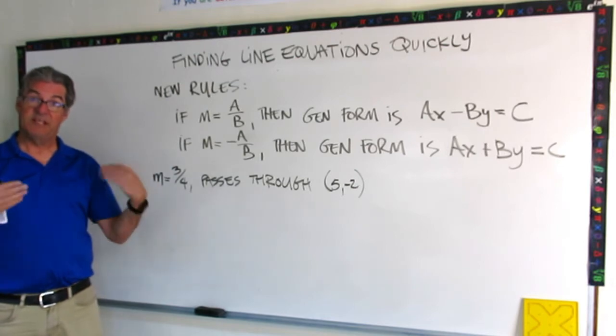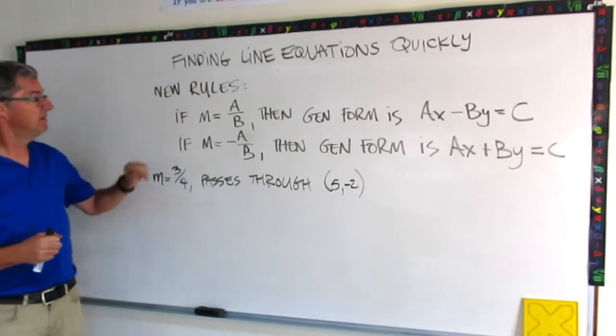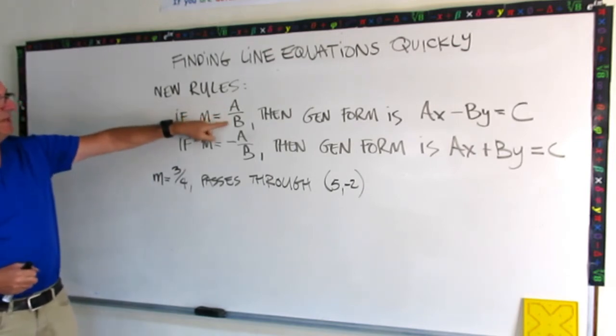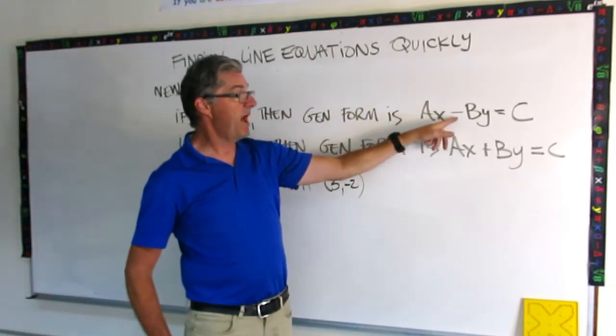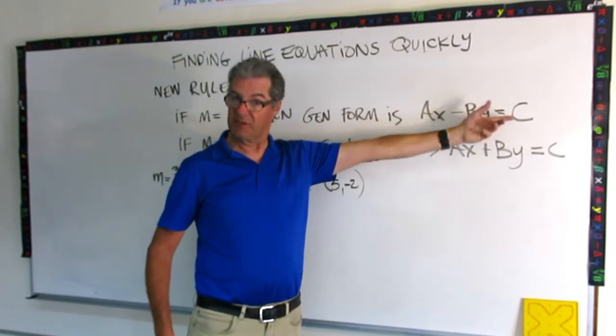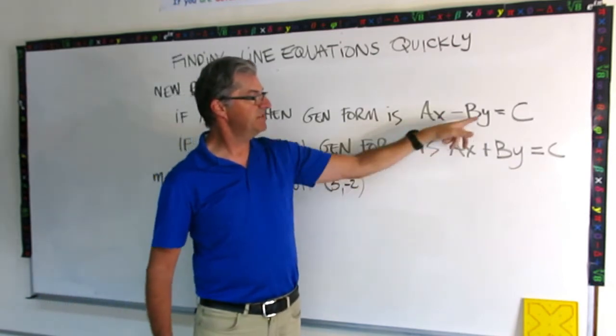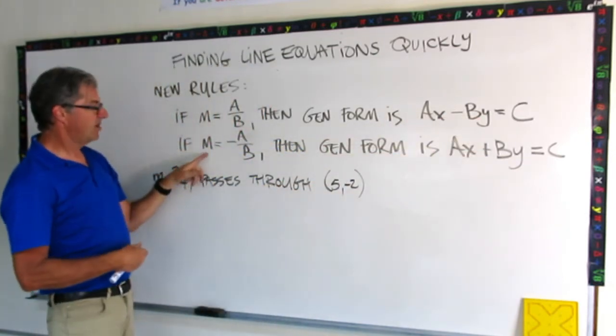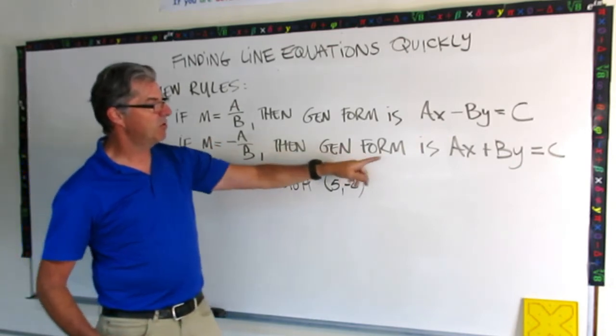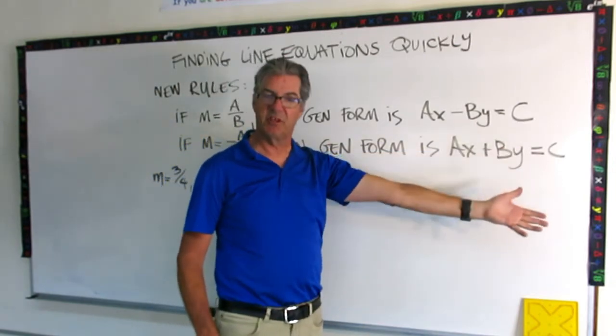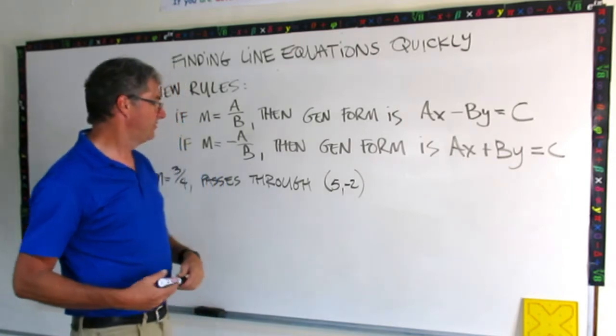So that last little bit leads us to a couple rules that we can then use to quickly find some line equations. So check this out. If our slope is just a over b, like there's no negative, this is a positive fraction, then the general form is going to be ax minus by equals the constant, equals c. So remember, if the slope is positive, there's a negative between the ax and the by. And similarly, if our slope is negative, some negative there, negative fraction, then the general form equation is going to be ax plus by equals c. So now we can exploit that to come up with a general form equation for a line nice and quickly.